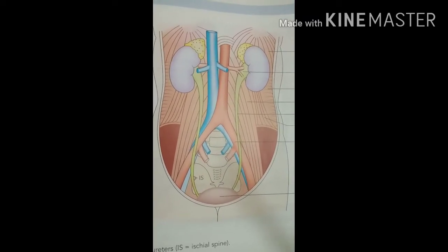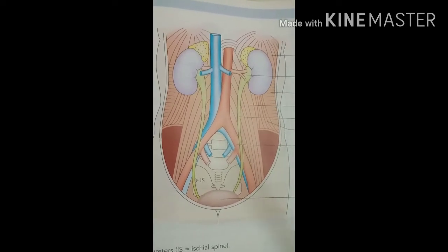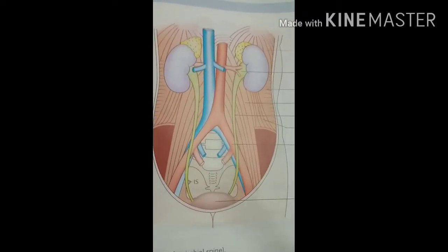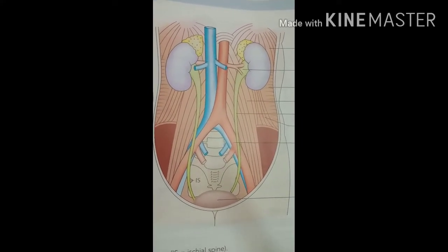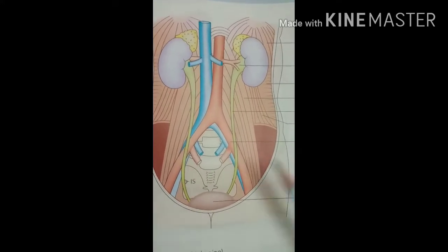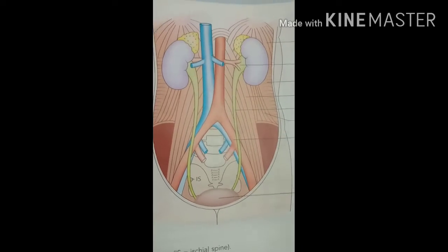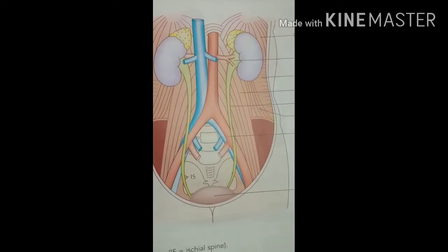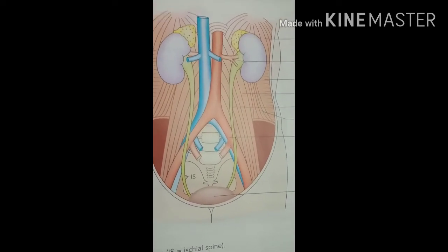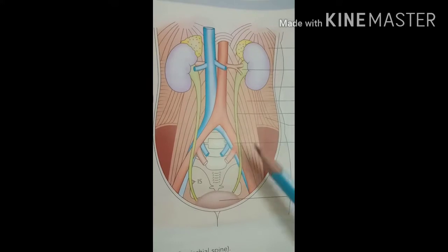The smooth muscle layer differs by region. In the upper two-thirds of the ureter, it is made by an inner longitudinal muscular coat and an outer circular coat. In the lower one-third, it consists of three layers: inner longitudinal, middle circular, and outer longitudinal. So the upper two-thirds has two muscle layers, and the lower one-third has three muscle layers.